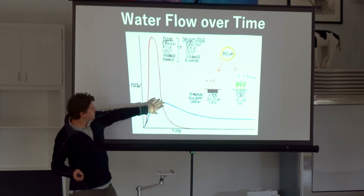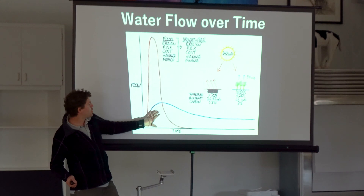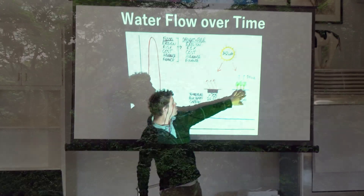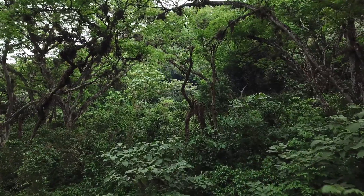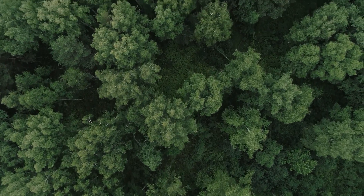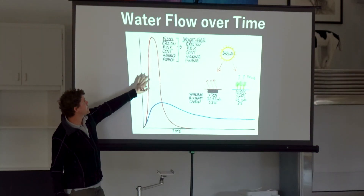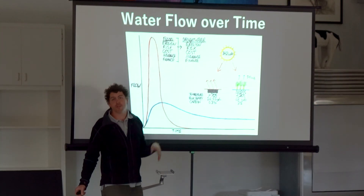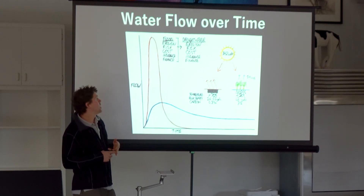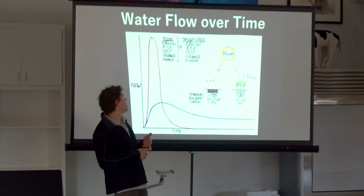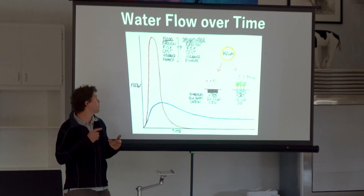In a living system, you still have some runoff, but a lot of that water is actually absorbed into this cool sponge that's just ready to take it, so water flow through the system is extended. In this designed flood-and-drought scenario, you end up with erosion, you end up with risk, and you end up with the costs associated with those.